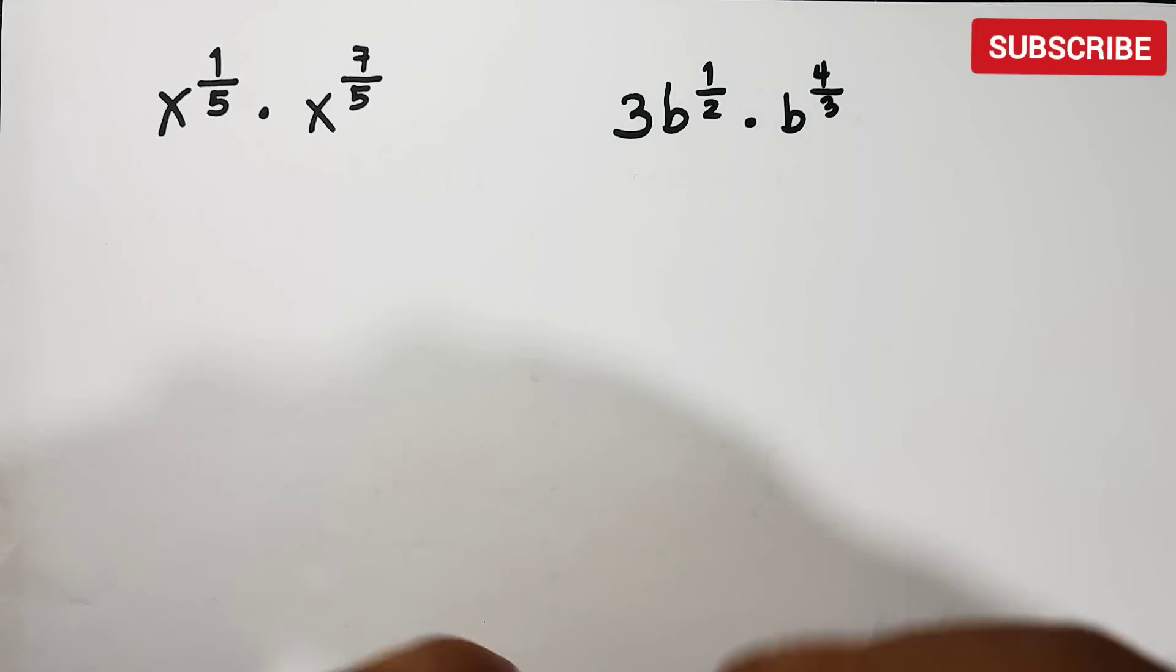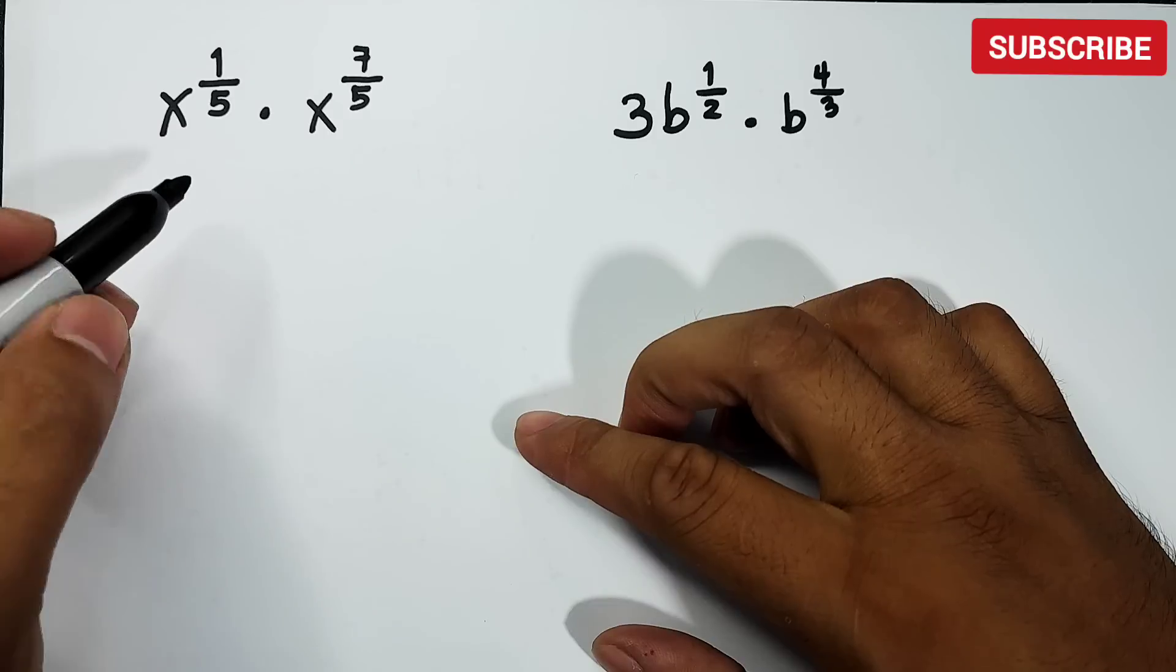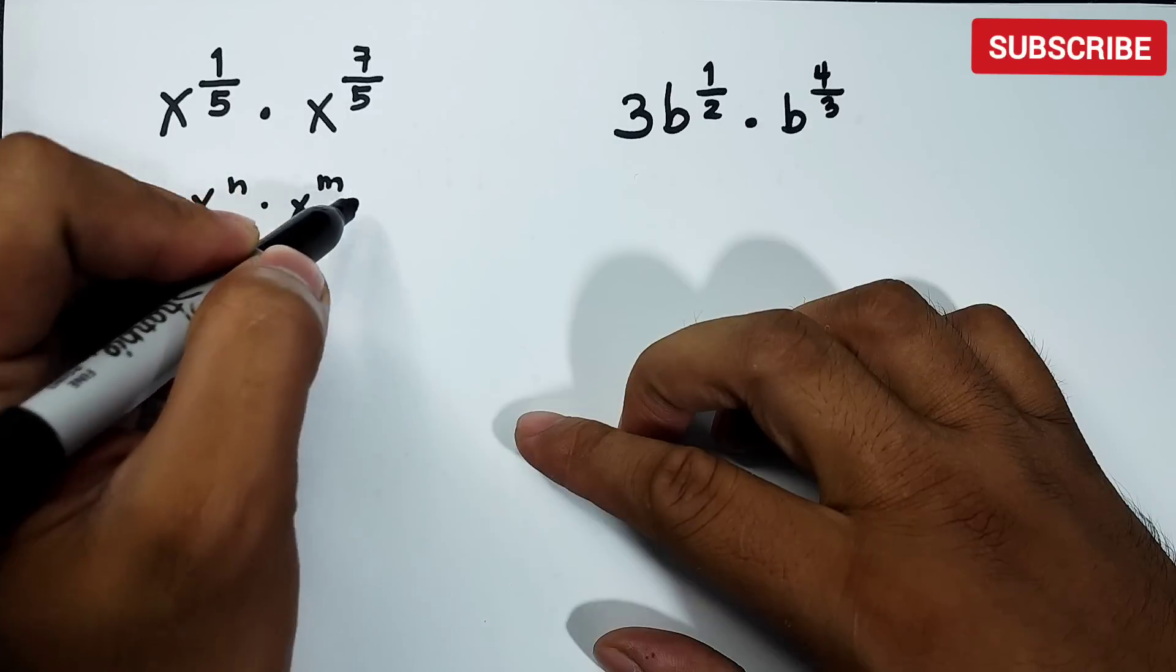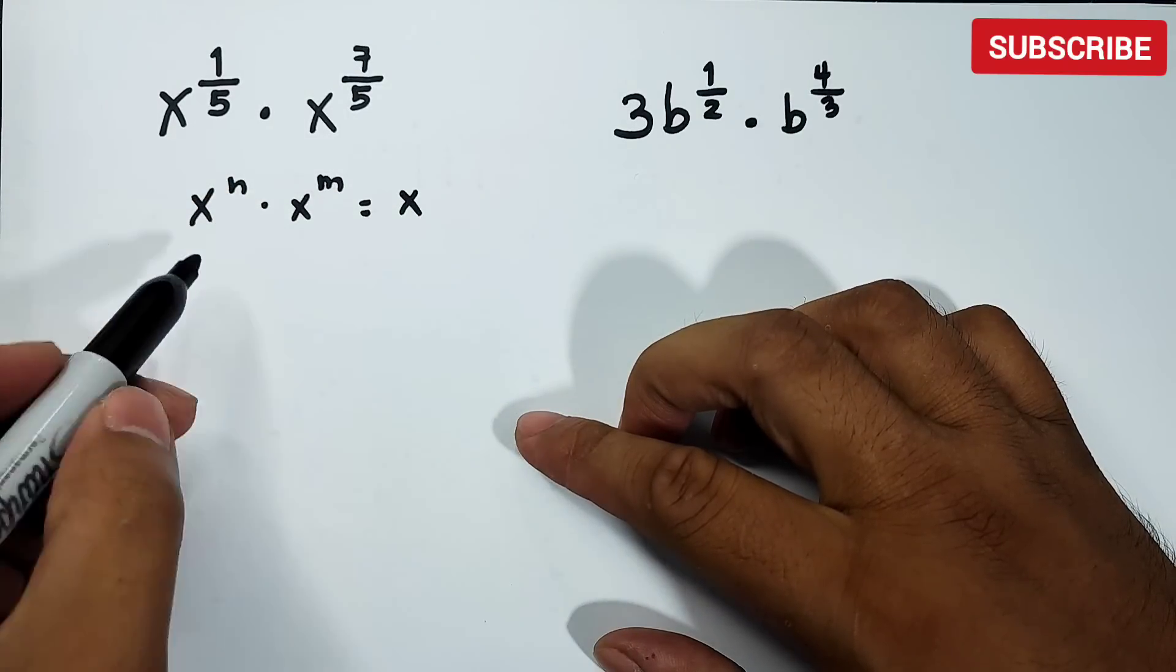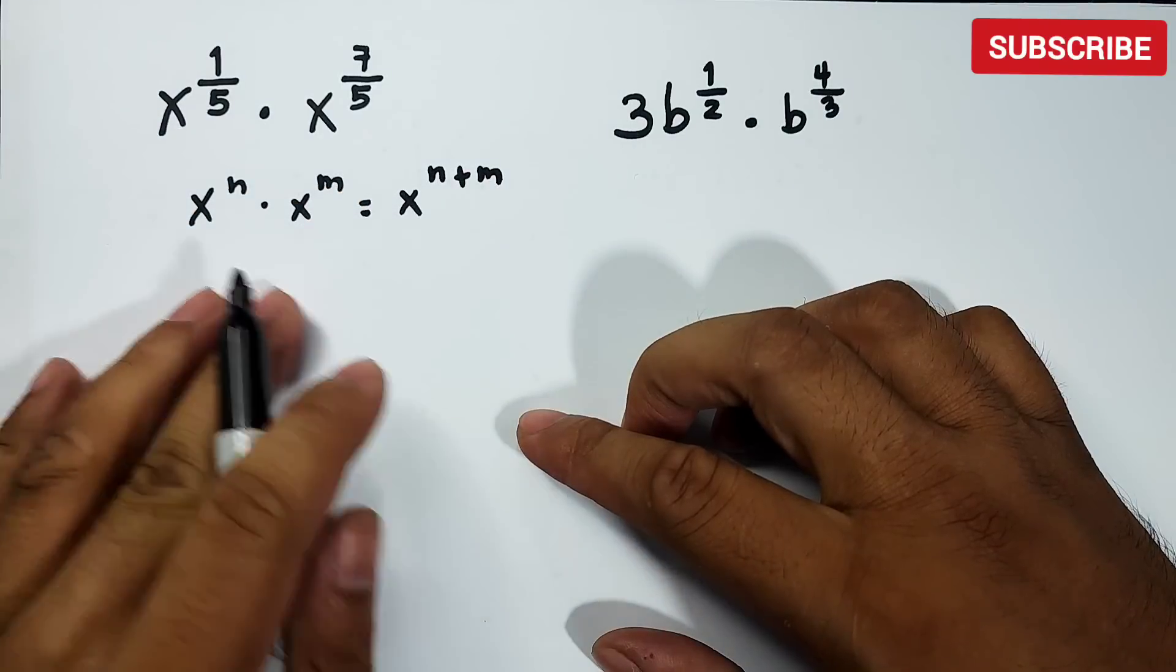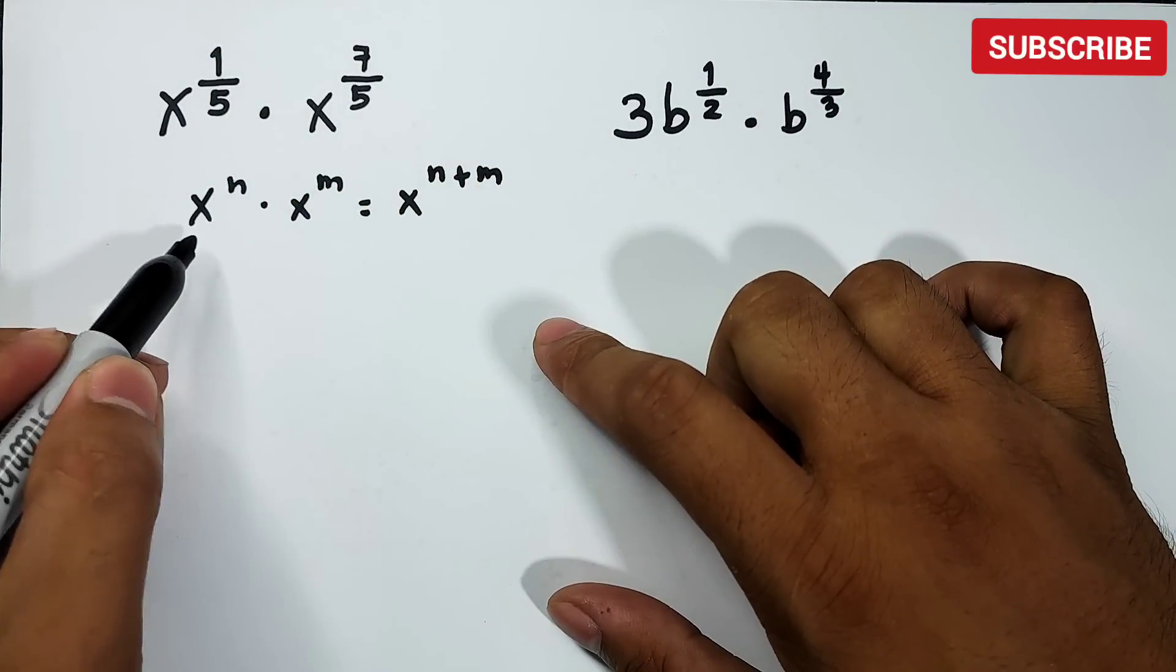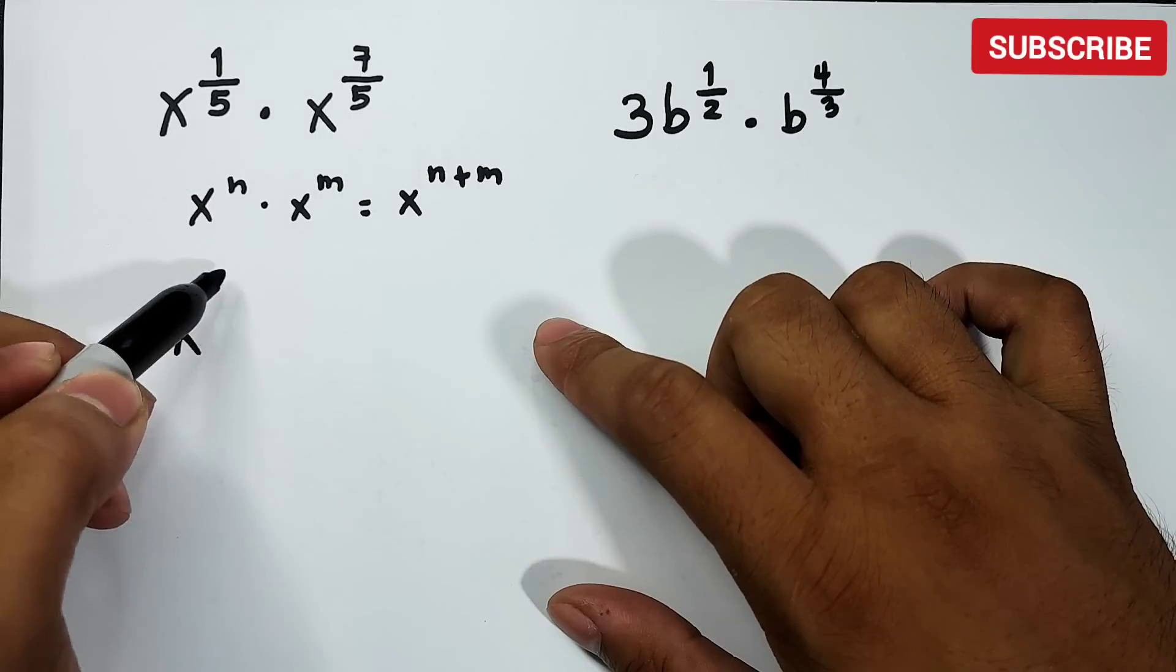So basically guys, we'll understand the product rule. Remember, laws of exponents we have x raised to n times x raised to m, wherein all we need to do is to copy the base and add exponents n plus m. So basically, we'll do it like this: copy the variable x since the bases are the same, then add exponents 1 over 5